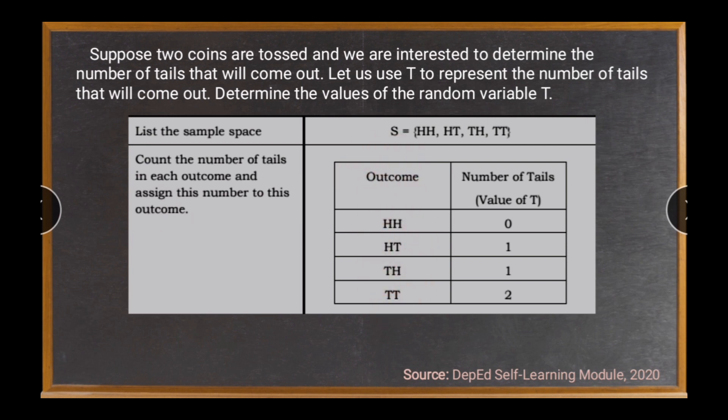So for our outcome, that is the sample space elements: head-head, head-tail, tail-head, tail-tail. And the number of tails, values of T, just determine how many tails for each outcome. For the head-head, there is zero. Head-tail, one. Tail-head, one. Tail-tail, two.